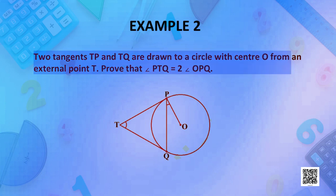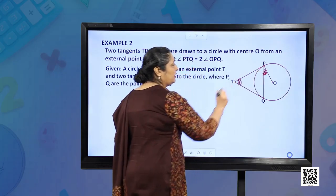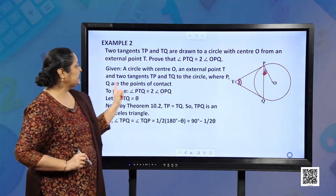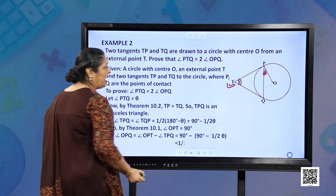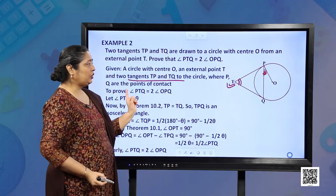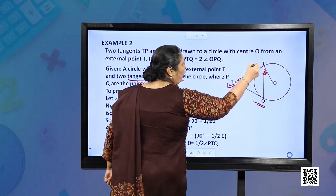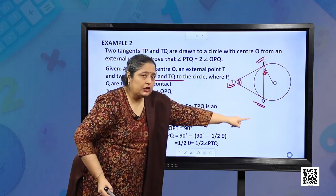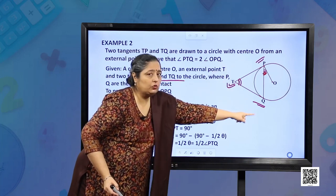Let us do some more examples. The second example: two tangents TP and TQ are drawn to the circle with center O from an external point T. Prove that angle PTQ is equal to twice of angle OPQ. So this angle is twice of the smaller angle. Given: a circle with center O and an external point T. From T we have two tangents TP and TQ, where P and Q are the points of contact on the circle.